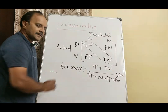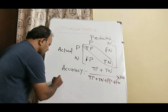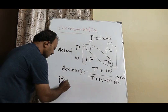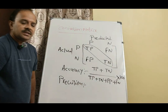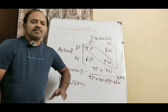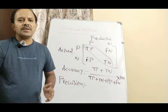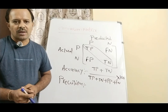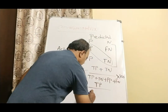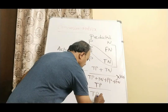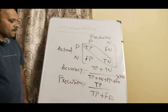The next parameter we can measure is precision. Since the model predicts some positive values, precision measures how many of those predicted positives are correct — how many positive values are correctly predicted by the model. It is expressed as: true positive divided by (true positive + false positive).